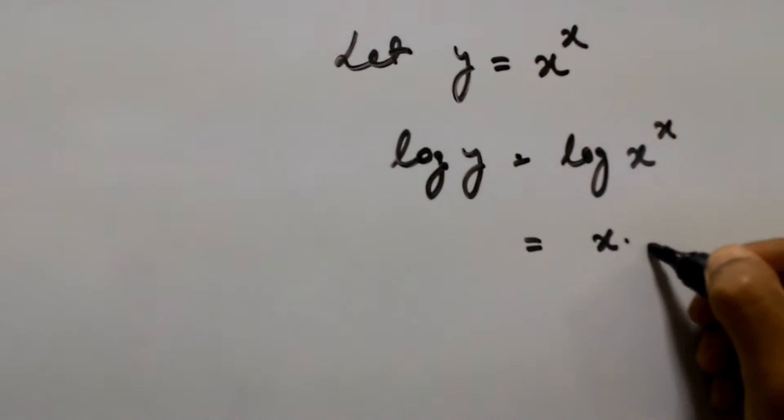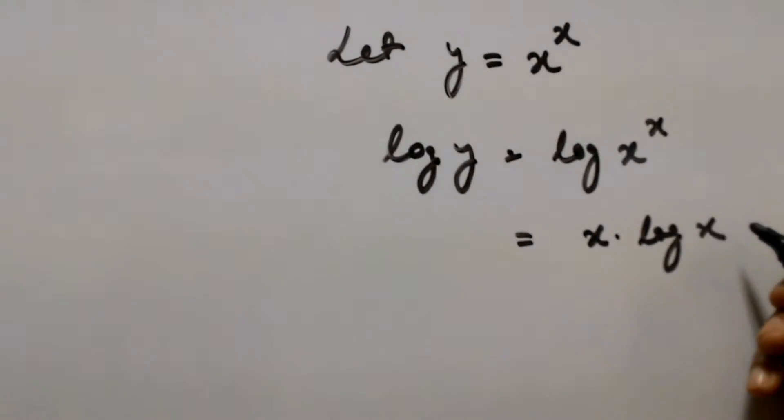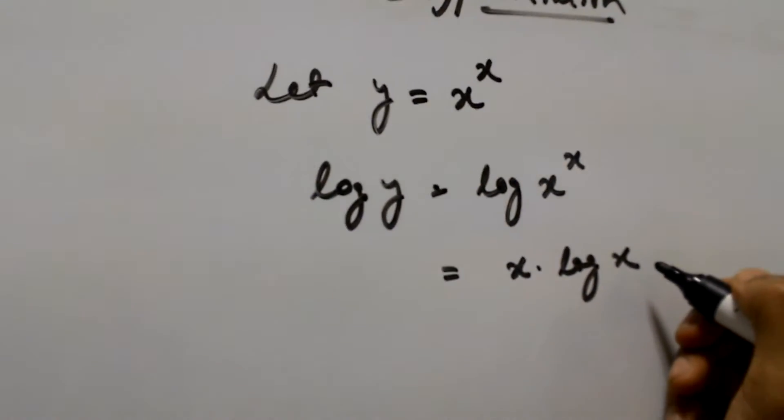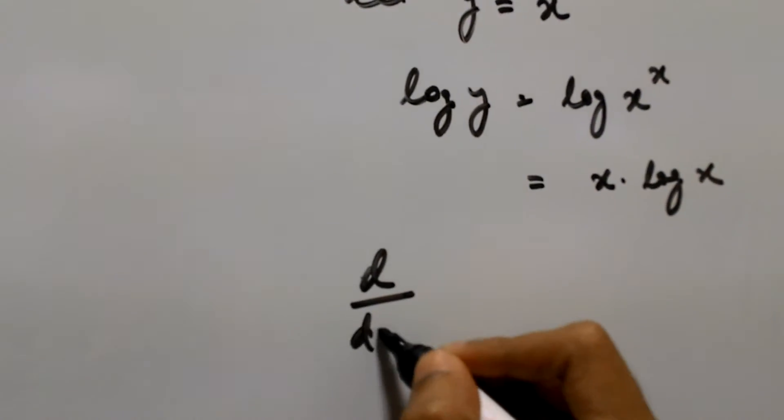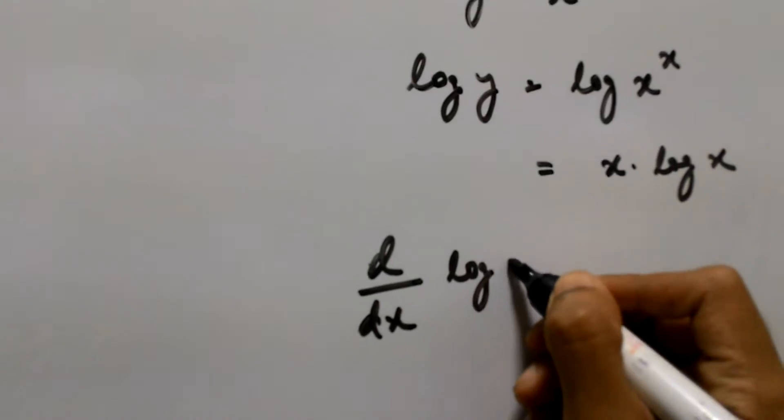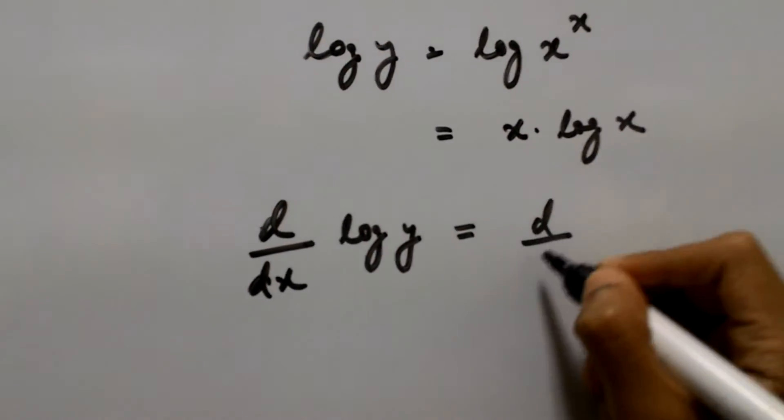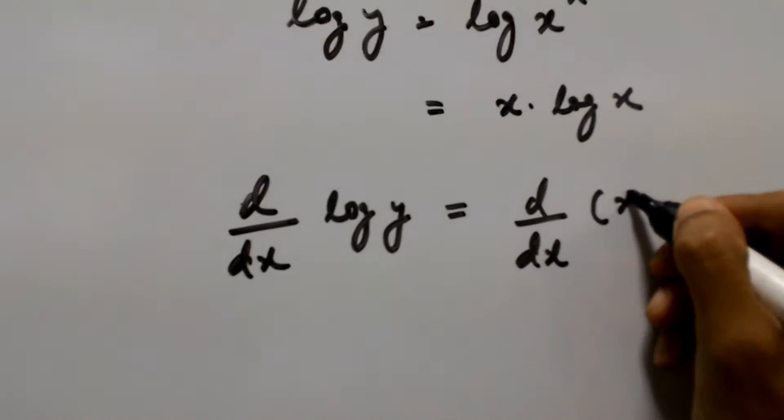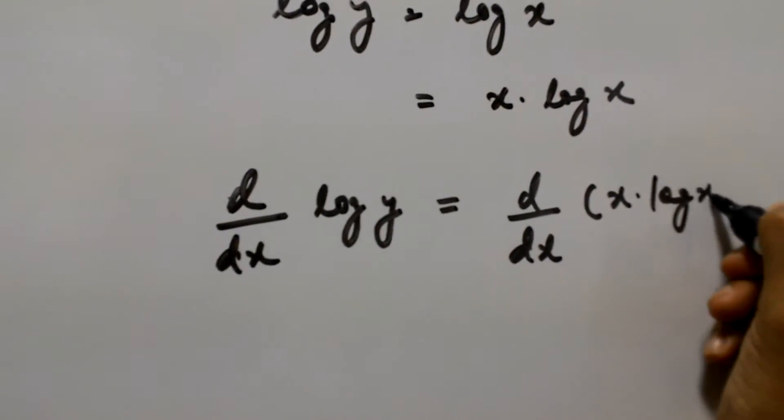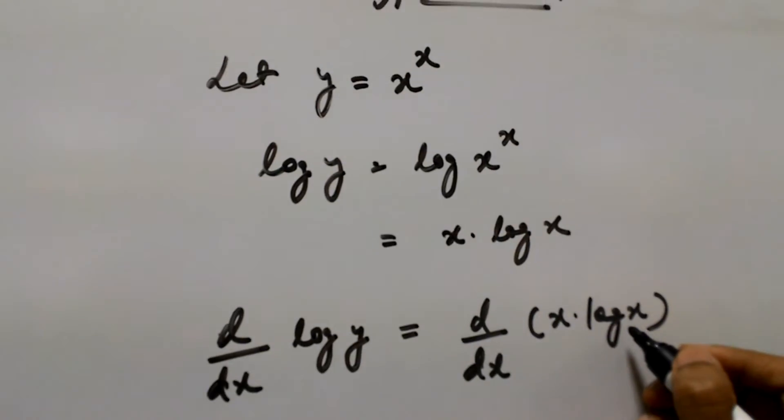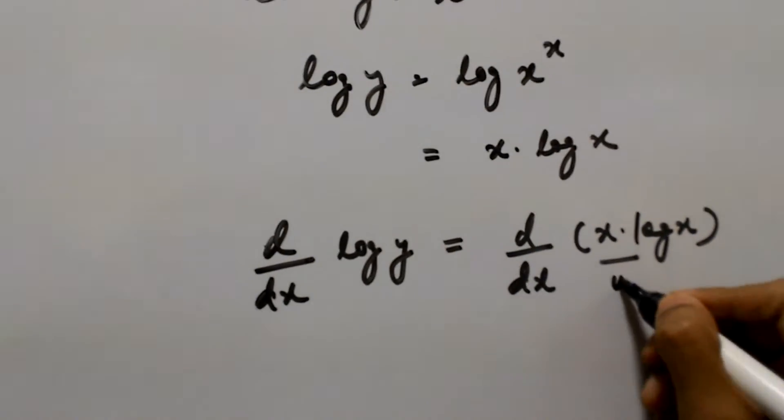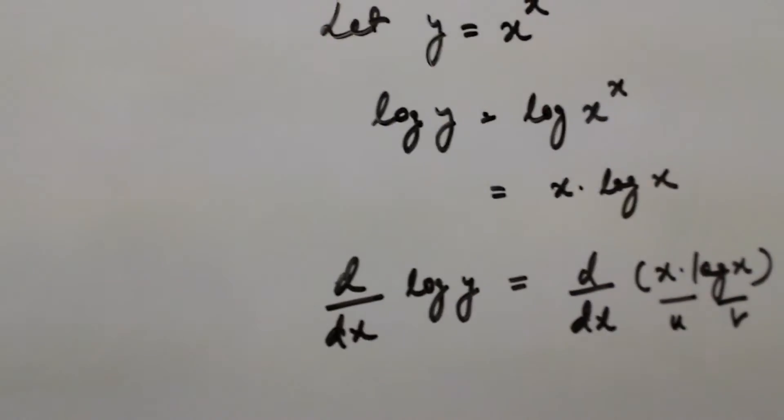This gives us x into log of x. Now if we differentiate both the functions with respect to x on both the sides, we get d by dx of log y equals d by dx of x into log of x. Now you can see that here there are two functions, one is x and one is log x, so we can use the product rule.